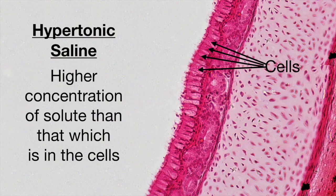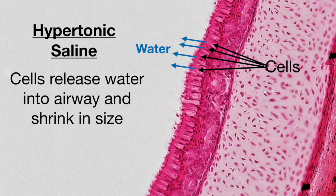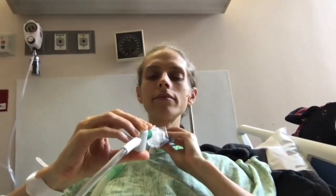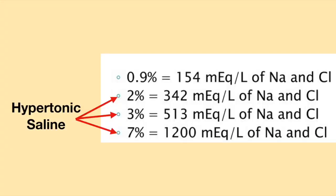When hypertonic saline is used in a nebulizer, the solution which enters the airways has a higher concentration of solute than that which is in the cells lining the airway. The cells release water into the airway and shrink in size. The extra water in the airway helps moisten the mucus and helps thin it out, making it easier to clear secretions via coughing or via suctioning if the person has a tracheostomy tube.